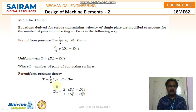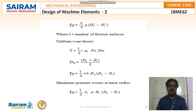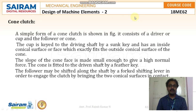For uniform pressure theory: T = (1/2)*i*mu*Fa*dm, where dm = (2/3)*[(do³ - di³)/(do² - di²)], and Fa = (pi/4)*p*(do² - di²), where i is the number of friction surfaces. For uniform wear theory: T = (1/2)*i*mu*Fa*dm, where dm = (do + di)/2, and Fa = (1/2)*pi*b*dm*(do - di). Maximum pressure occurs at inner radius, so Fa = (1/2)*pi*p*di*(do - di).